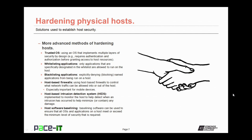There are also more advanced methods of hardening hosts. The first is to use a trusted OS — an operating system that implements multiple layers of security by design, requiring authentication and authorization before granting access to host resources. Whitelisting applications can also be done, where only applications specifically designated in the whitelist are allowed to run on a host. Then there is blacklisting applications, which is the process of explicitly denying or blocking named applications from running on a specified host.